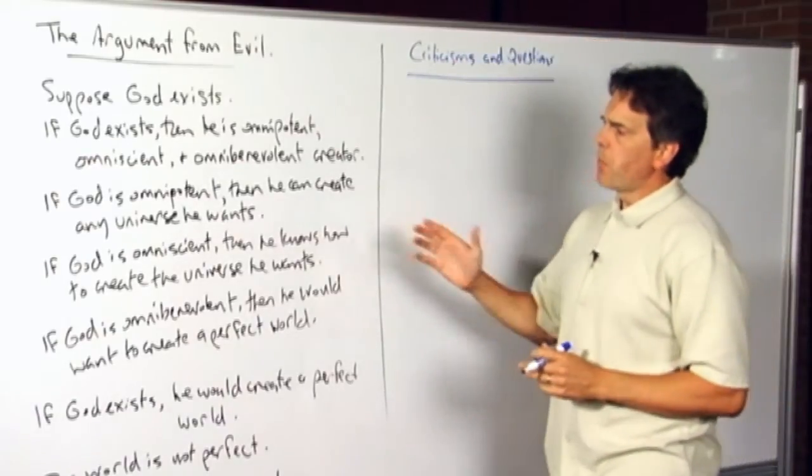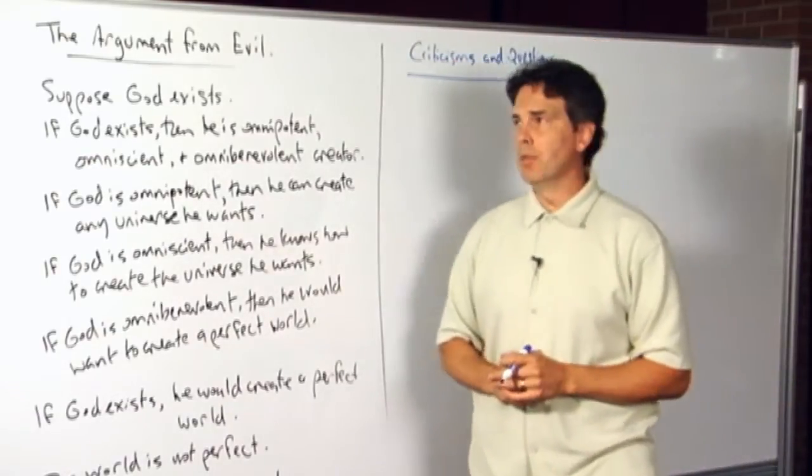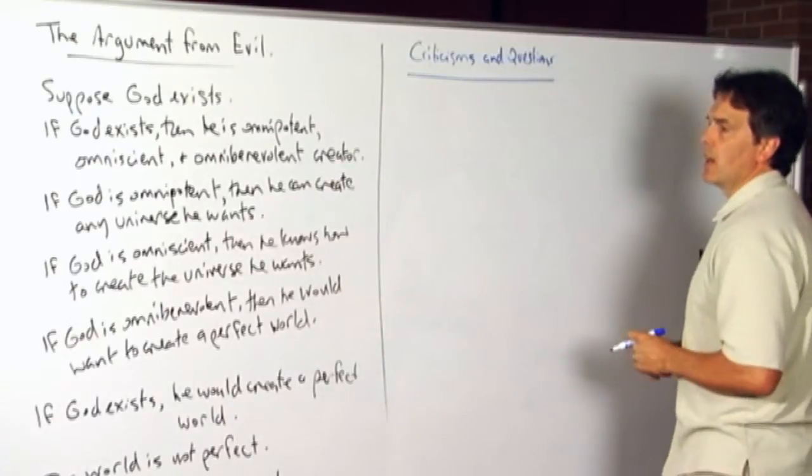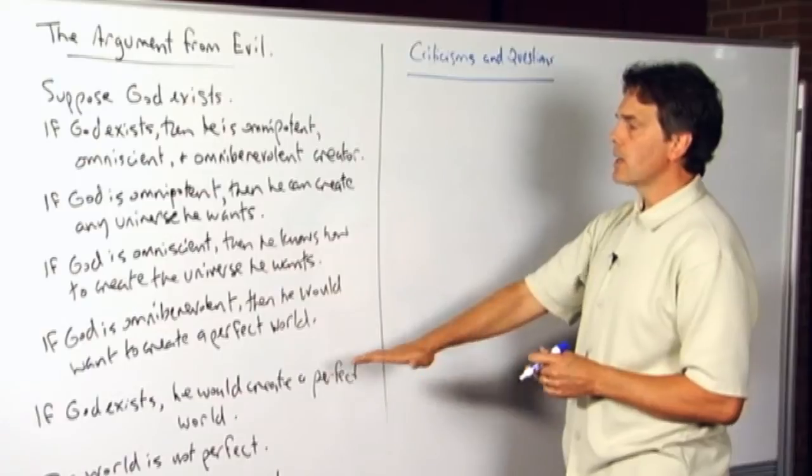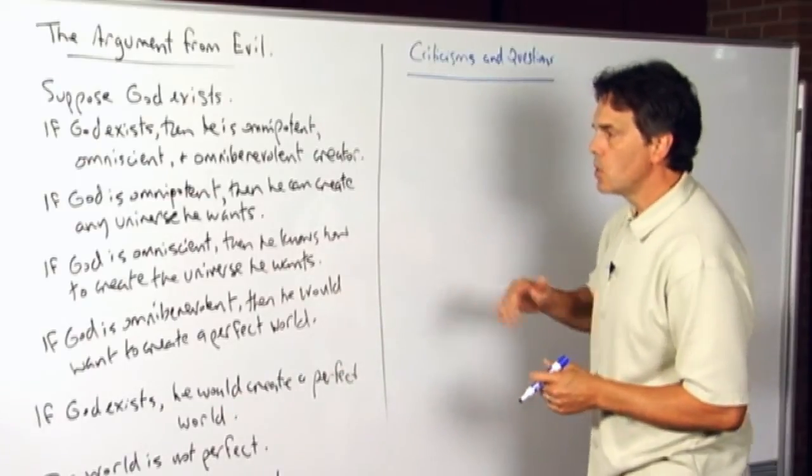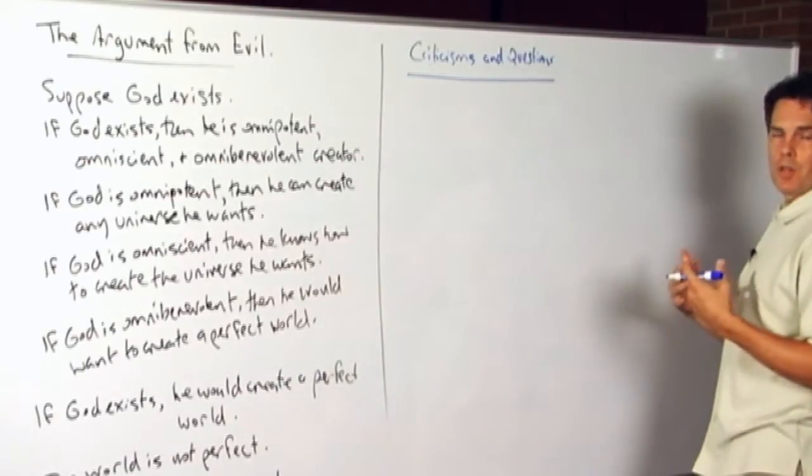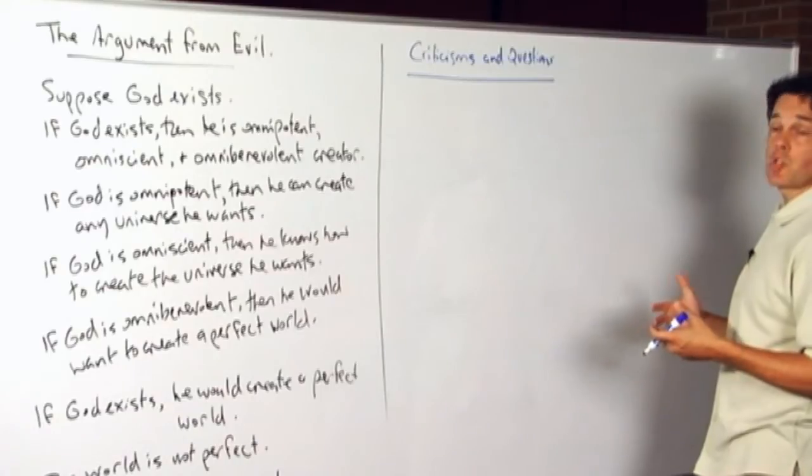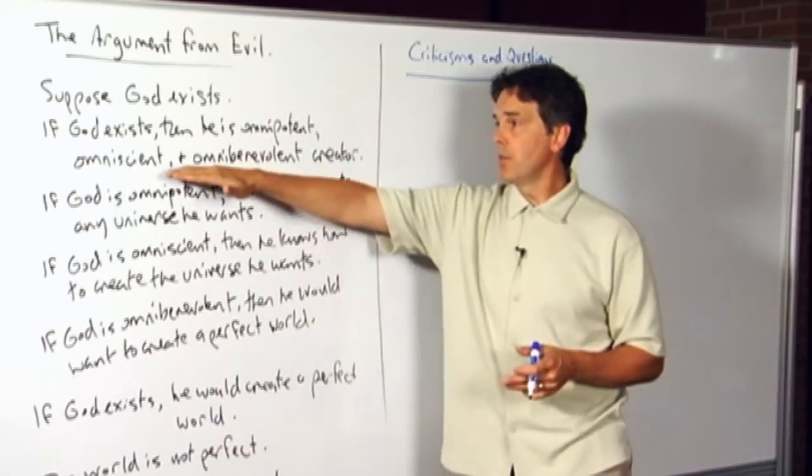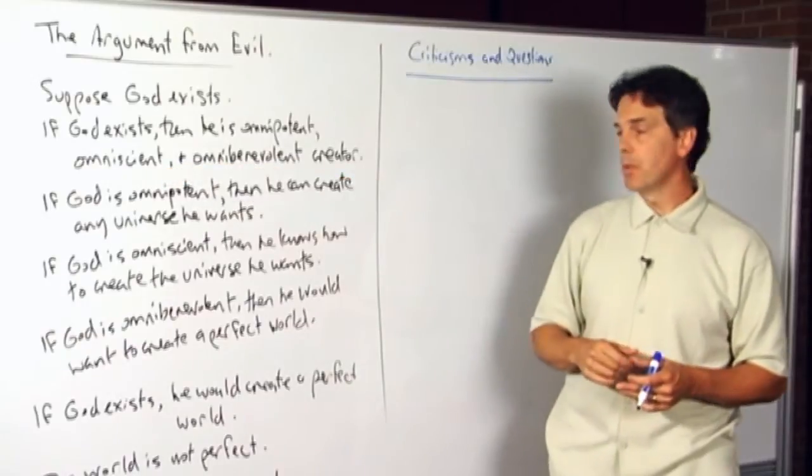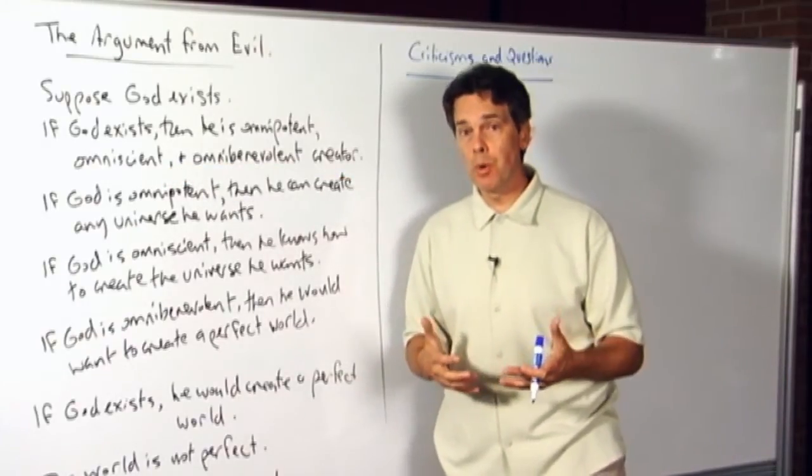One standard response to the argument from evil is to say that everything in the argument is fine, except that it does not take into account that God created human beings as a special kind of agency. So, God is omnipotent, God is omniscient, God is omnibenevolent, and in fact, He did create a perfect world.